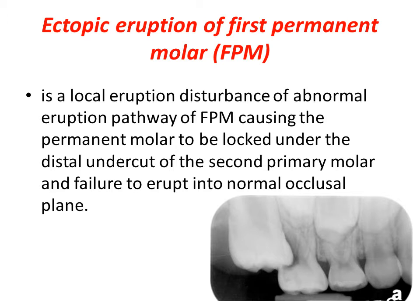The six is locked under the distal buccal cusp of the primary second molar, causing its distal root resorption.